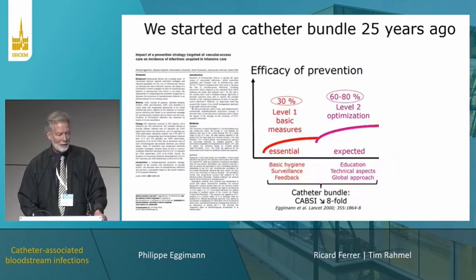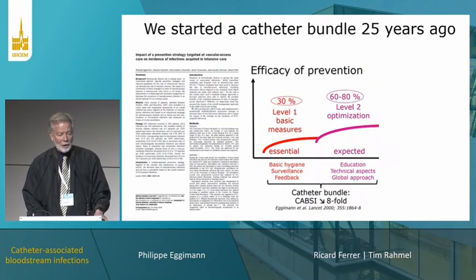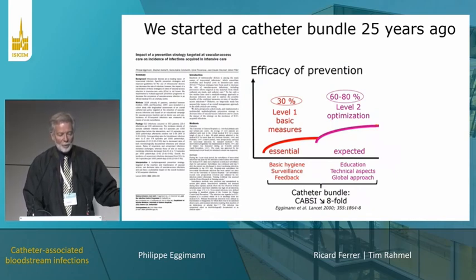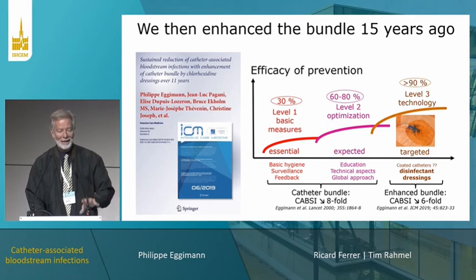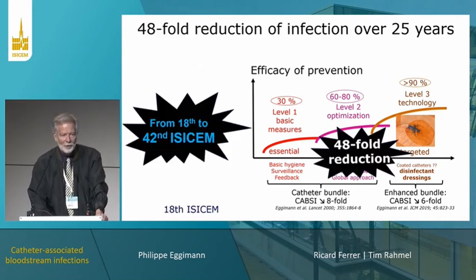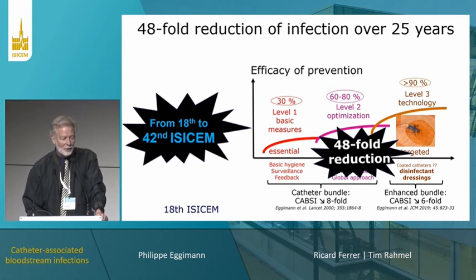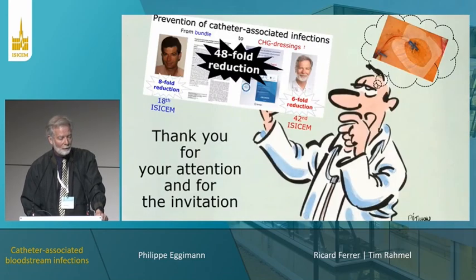To summarize: we started with the catheter bundle 25 years ago using basic measures, then enhanced it with chlorhexidine on the skin and in dressings 15 years ago. Taken together, all these measures correspond to a 48-fold reduction in the rate of infection from the 18th to the 42nd ICSM. Thank you for your attention.